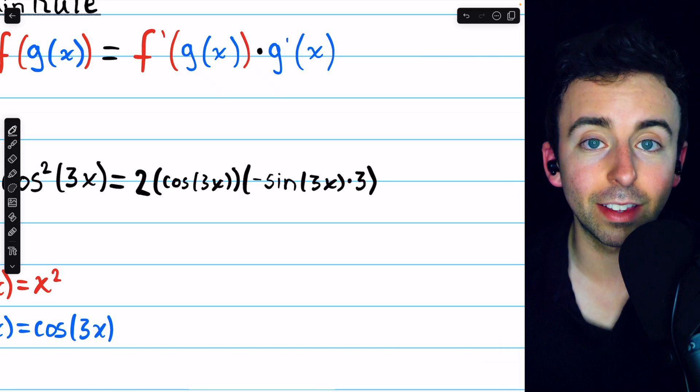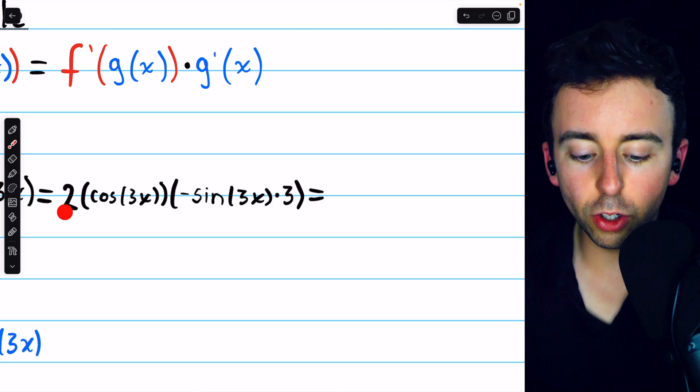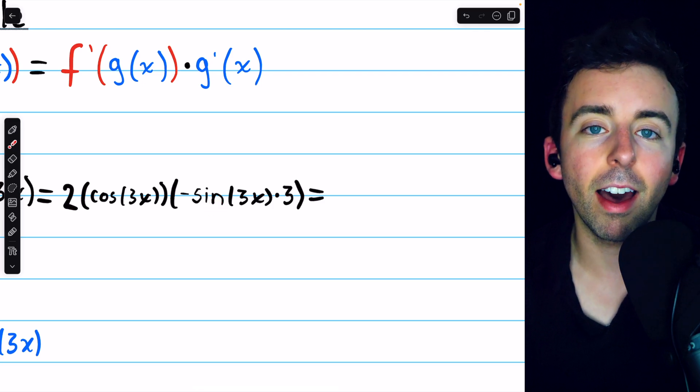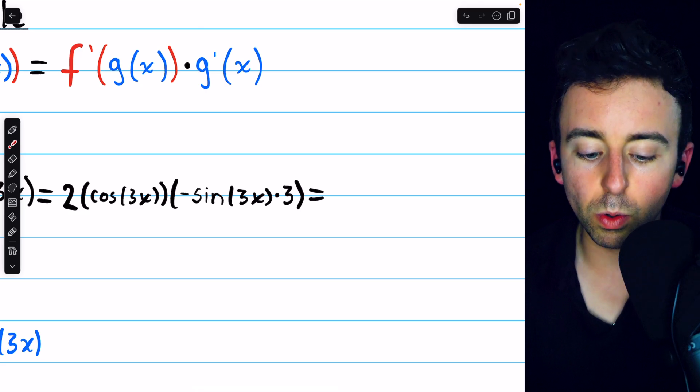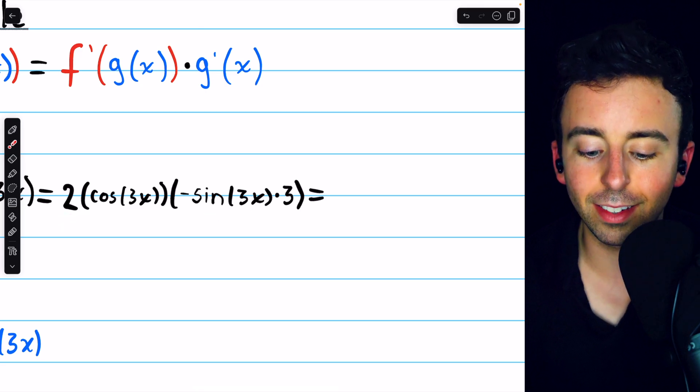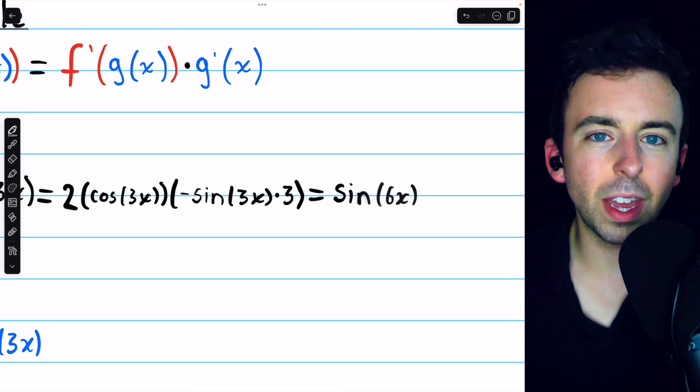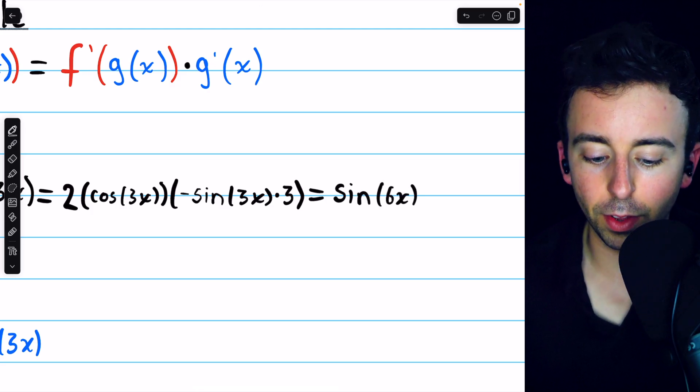And that's our answer. There is some simplification we should do though. 2 times sine of x times cosine of x is actually sine of 2x. So 2 times sine of 3x times cosine of 3x is actually sine of 6x. So you've got to know your double angle identities for that one.